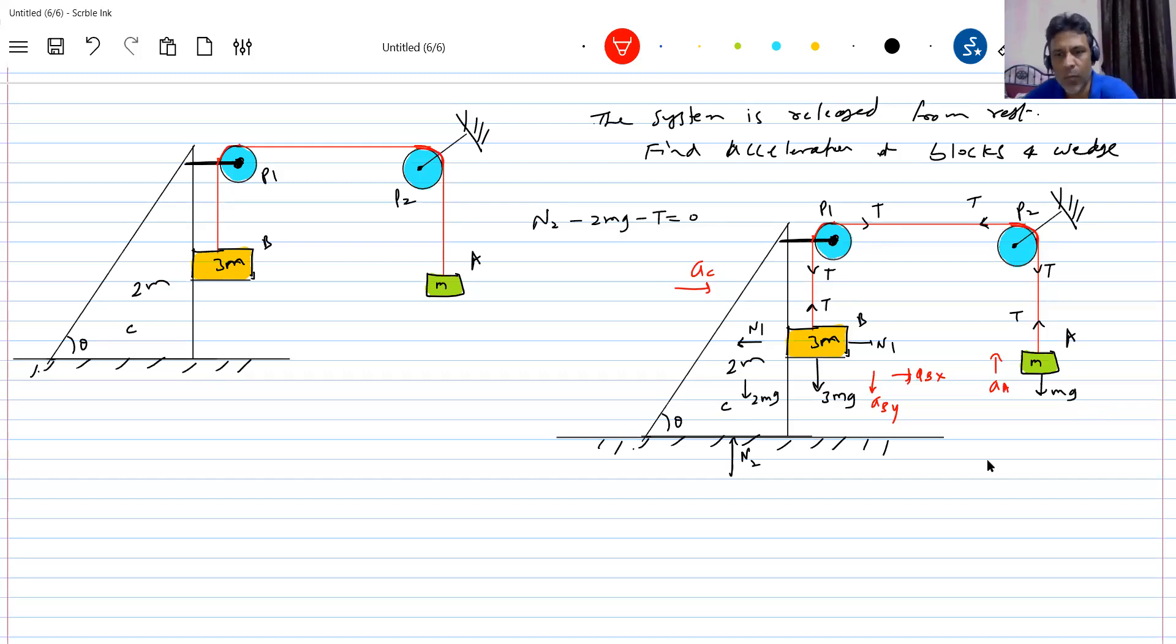Then, is the block B and the wedge, they're in contact? Yes, they'll be in contact. So A_BX should be equal to A_C. The block B and wedge C are in contact. So acceleration along common normal must be equal. So therefore, what is the first constraint equation? A_BX should be equal to A_C.